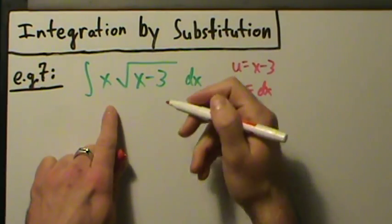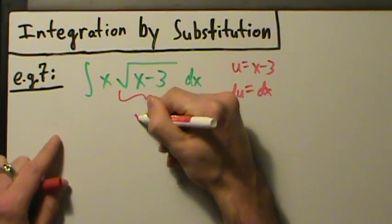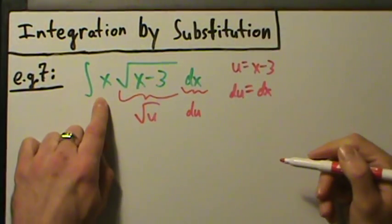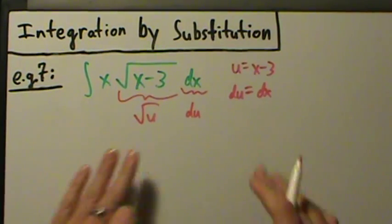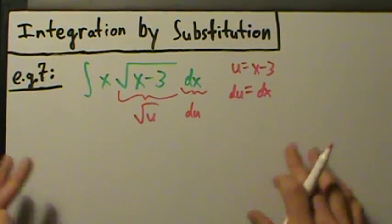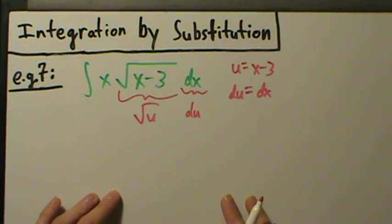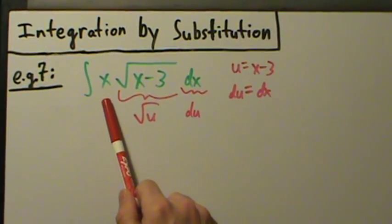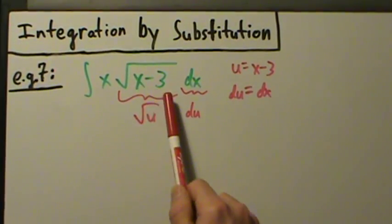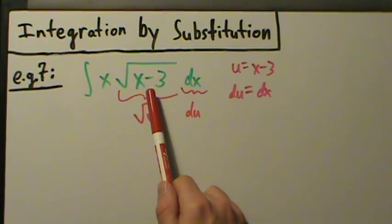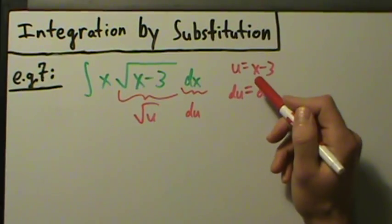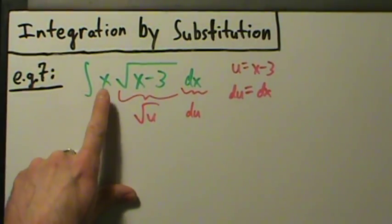That's great — that's what we have right here. But then we still have this x to worry about, so this would become the square root of u, and dx is just exactly du. But then we still have this x to worry about. So you might think, well, maybe that's not the right u to pick. But then you'll try that other thing we talked about: if you can't see a function and a constant multiple of its derivative, try to let u be the inside function.